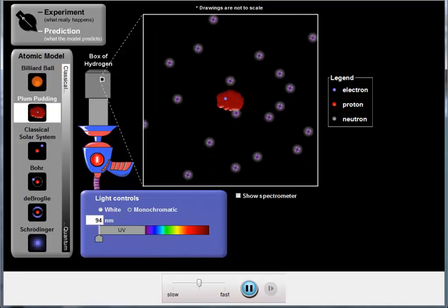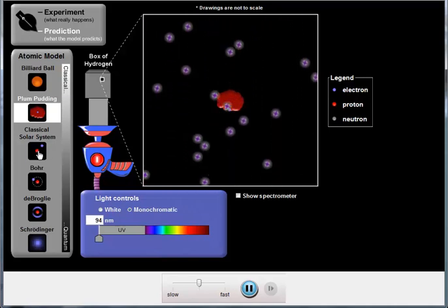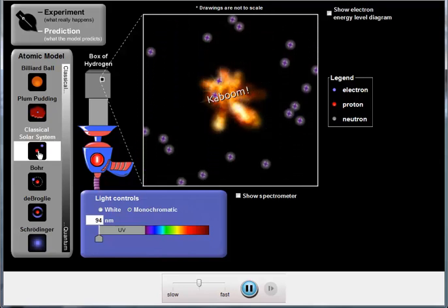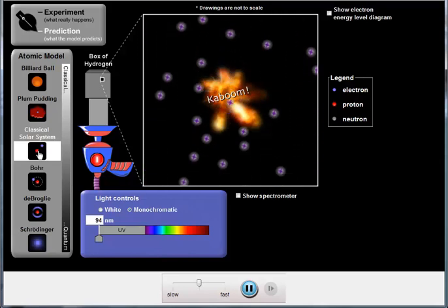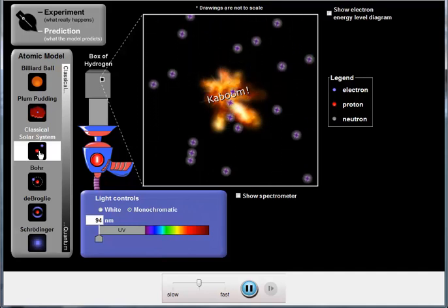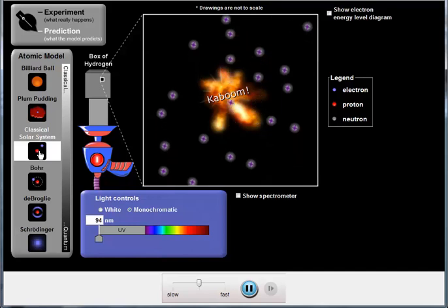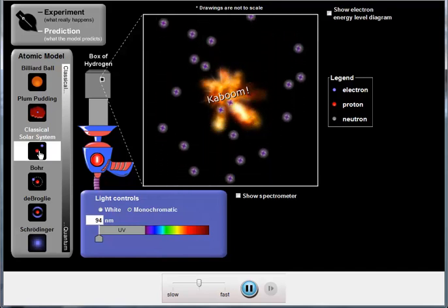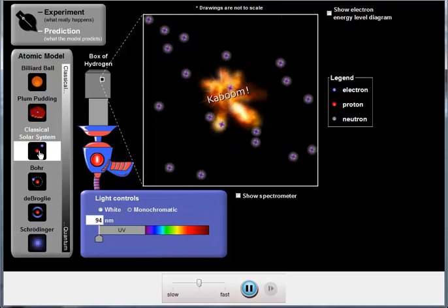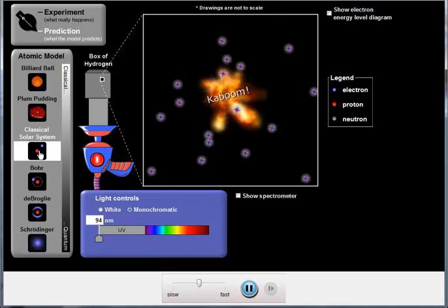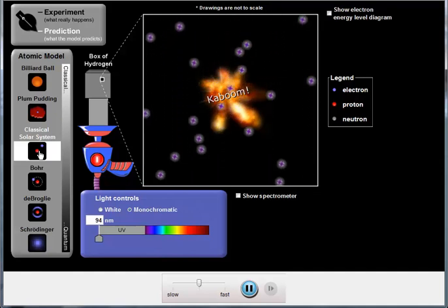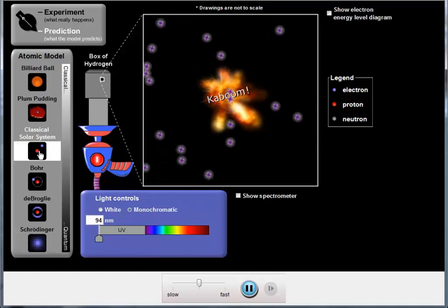Ben Rutherford did his gold foil experiment, and he proposed a classical solar system model for the atom. But you saw what happened there. It was successful in terms of explaining his experimental results, but to have an electron whizzing around a small positively charged nucleus was totally against what they believed in classical physics. That electron should spiral into the nucleus, be captured by the nucleus, and the atom should disappear in what is sometimes called a flash of purple light, or in this case kaboom.